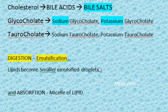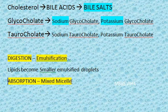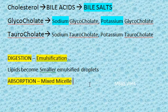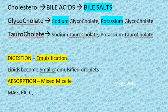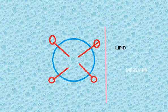Regarding the role of bile salts in lipid absorption: they form mixed micelles. These mixed micelles are smaller in size than lipid emulsion droplets. Inside the micelle, the hydrophobic lipids are found — triacylglycerols, monoacylglycerols, fatty acids, cholesterol, and phospholipids — while the bile salts are on the outside.